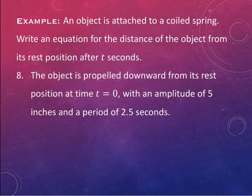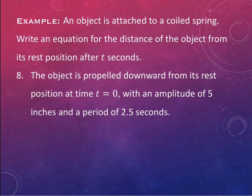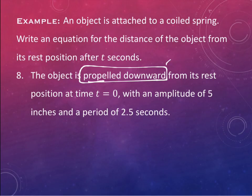The next example: an object is propelled downward from its rest position. Unlike the previous example where it was pulled and released, this one starts at rest and is then pushed downward. Since it starts at rest, we use the sine function.